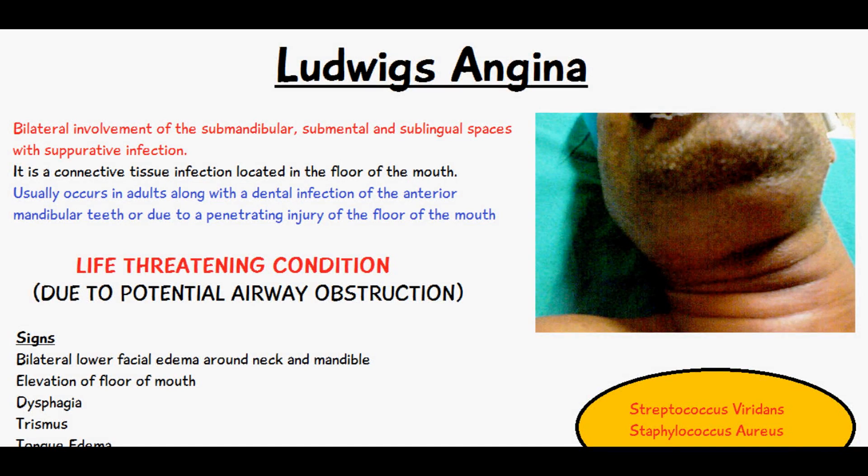In today's video we're going to be talking about Ludwig's angina, which is basically where we have the bilateral involvement of the submandibular, submental and sublingual spaces, and there is a suppurative infection in these regions. It's considered to be a connective tissue infection or a form of cellulitis located in the floor of the mouth. It often occurs in adults, usually alongside some kind of dental infection involving the mandibular incisors, or it can also be due to some kind of penetrating injury to the floor of the mouth.